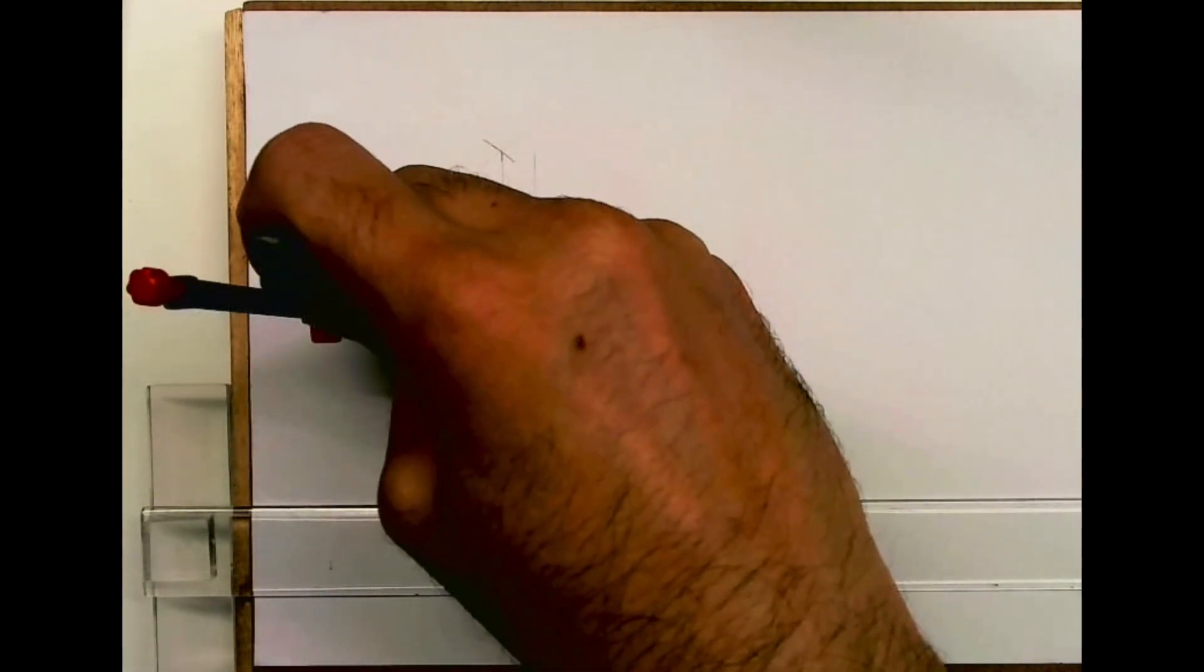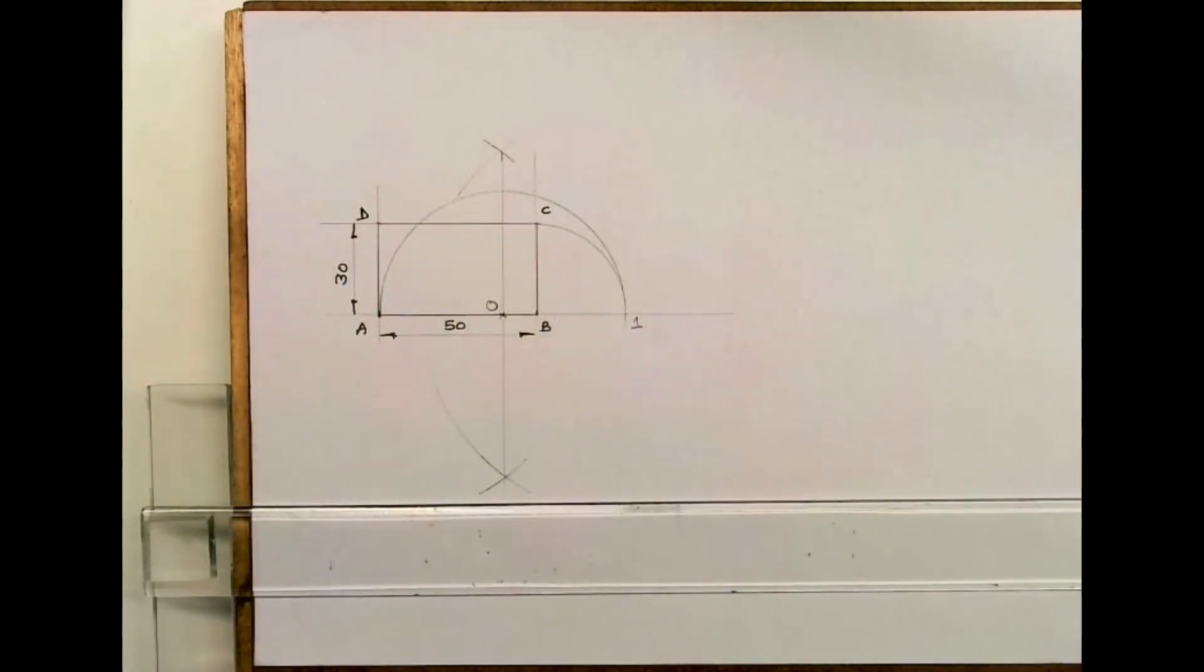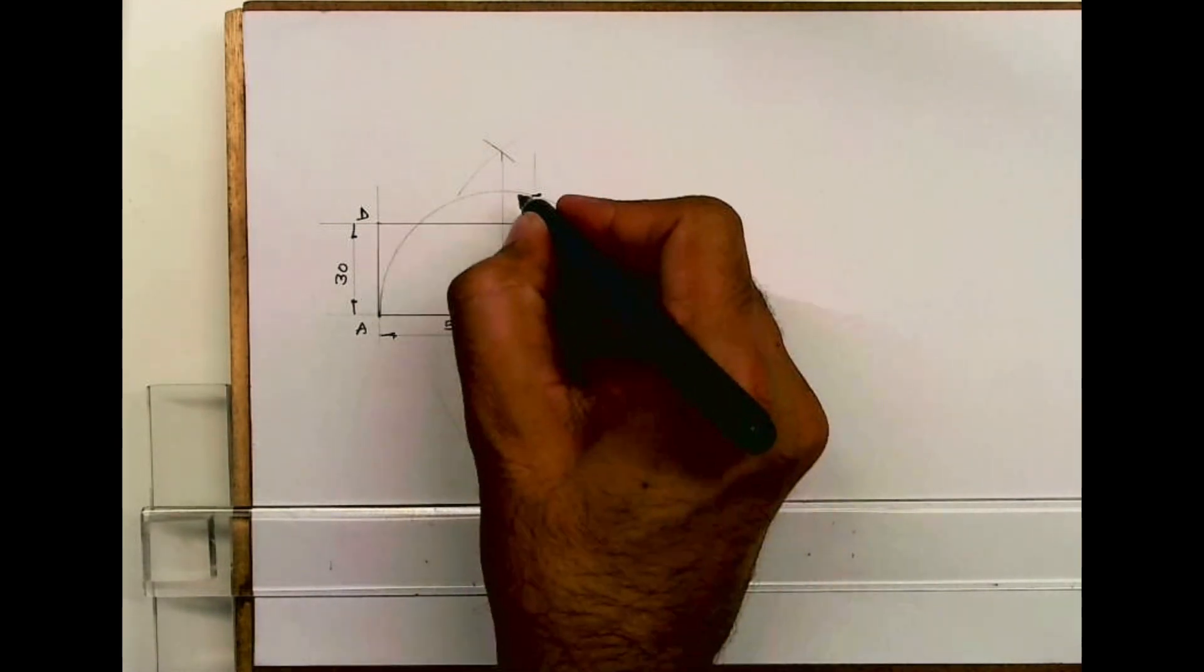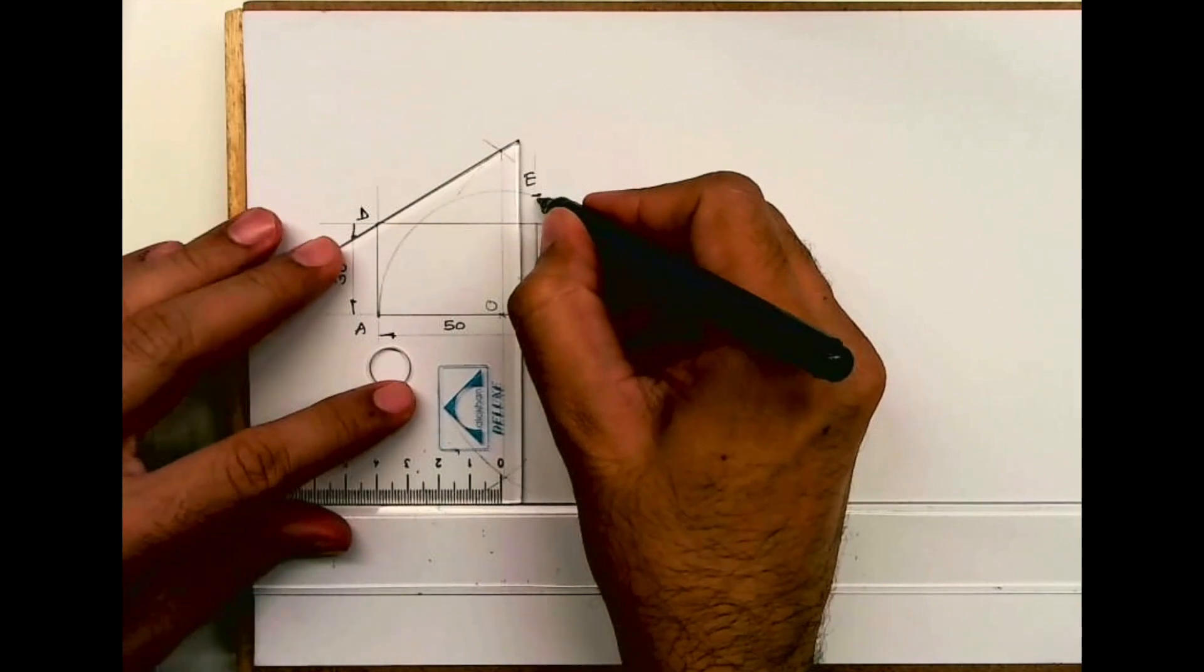From O to A you draw a semicircle. Now you get point E, so BE is the side of the square.